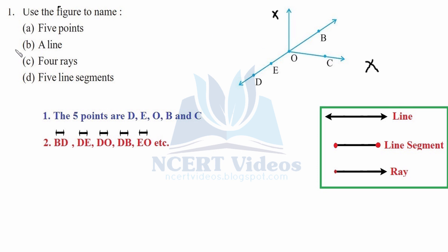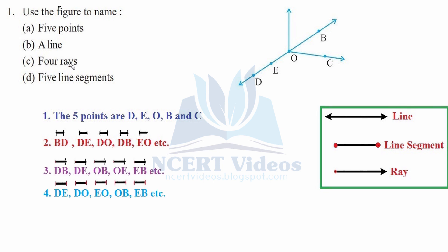Now part c: four rays. A ray starts at a point and goes to infinity in one direction. DB is a ray. DE is also a ray because it falls within DB. We can also name rays as OB and EV — there are many different ways to name the rays.